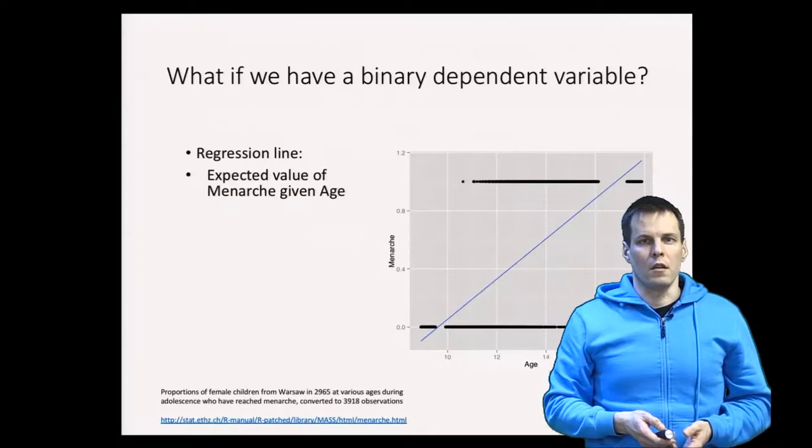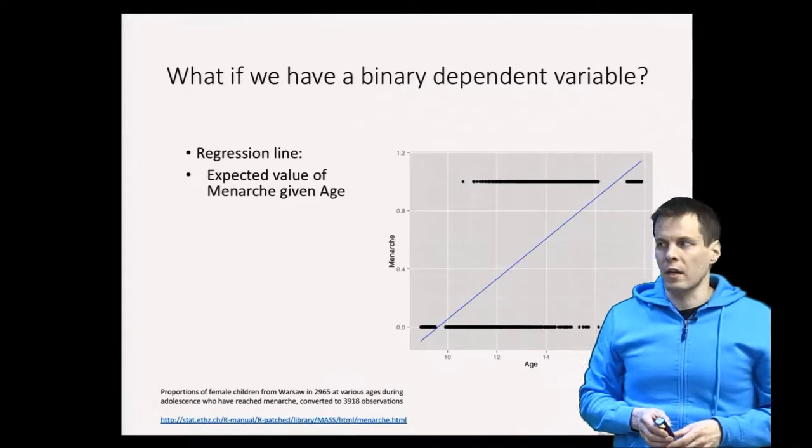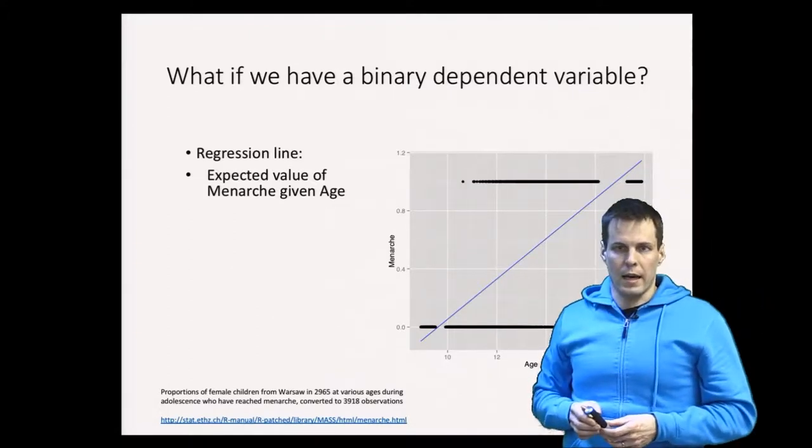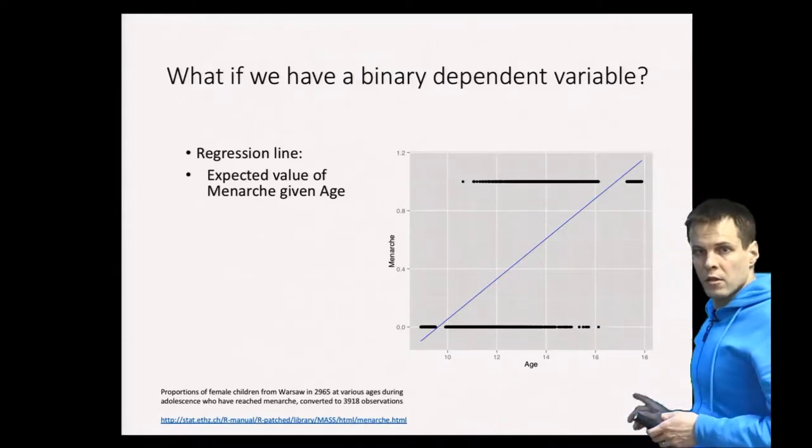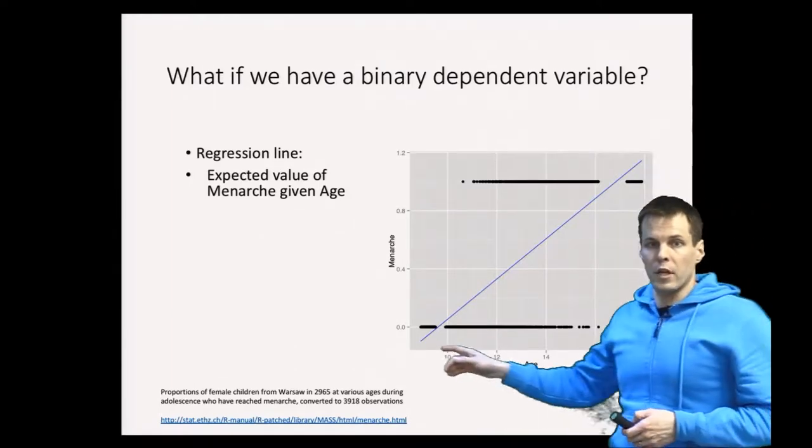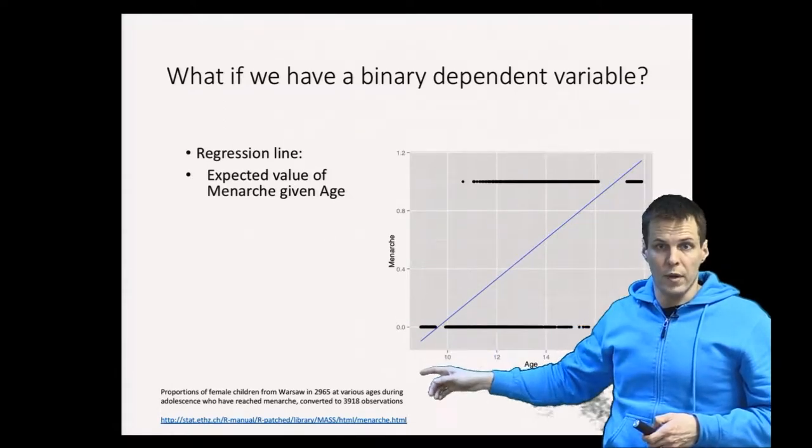To illustrate the logistic regression analysis technique, we need example data. This example data are girls from Warsaw ranging from about 10 years to about 18 years, and the dependent variable here is called menarche, which is whether the girl has had the first period or not.